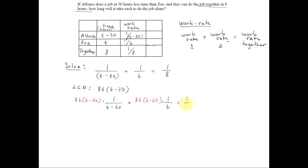This equals 1 eighth times the LCD of 8t times t minus 30. In the first term, the t minus 30 reduces out and I'm left with 8t. In the second term, the t's reduce out and I'm left with 8 times t minus 30. On the right side, the 8's reduce out and we get t times t minus 30.